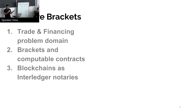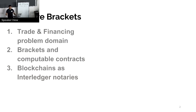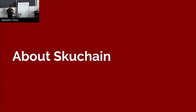Our problem domain is trade finance. We have built a solution to that problem that we call brackets, and they're essentially a form of computable contract. In order for Interledger to support our use case, we basically just need to be able to treat the cryptographic conditions of an escrow as something that can be hosted on blockchain, which seems to be relatively easy given the way we have it.